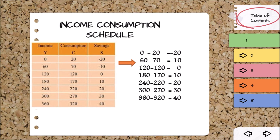When income is 60 rupees and consumption is 70 rupees, the difference is minus 10, indicating dissaving. As income increases to 120 rupees, consumption also reaches 120 rupees — this is the break-even point, where income equals consumption and saving is zero. When income rises to 180 rupees and consumption is 170 rupees, the difference is 10 rupees, meaning people are able to save.